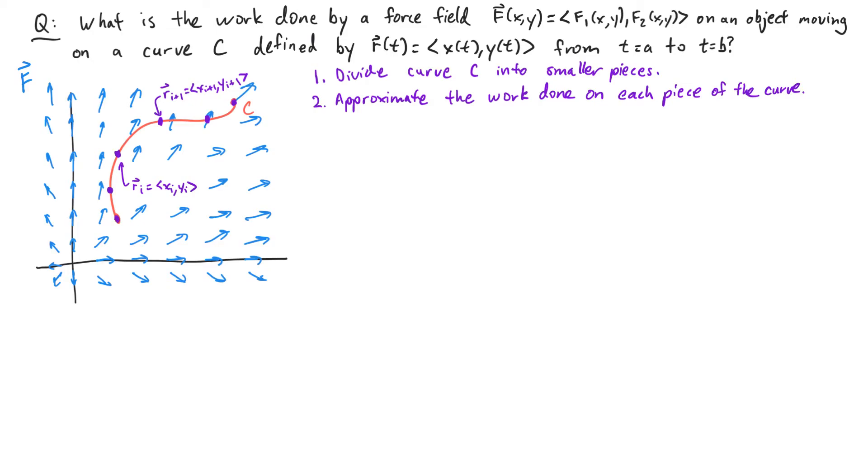Between these two points, I'm going to assume that my object moves in a straight line. So my displacement vector, delta r, looks like this.